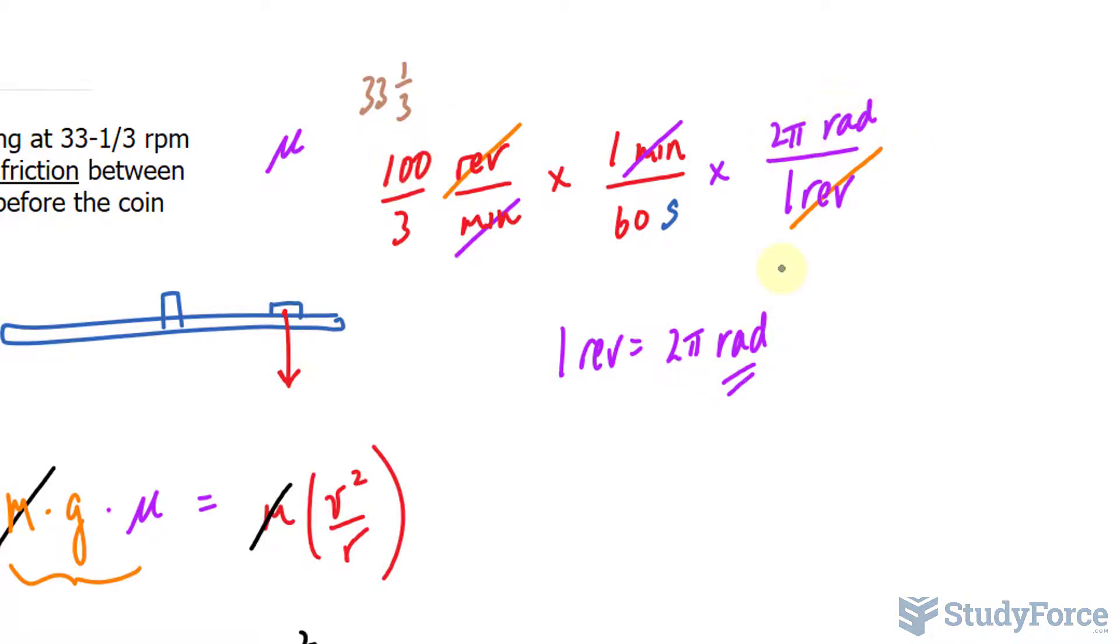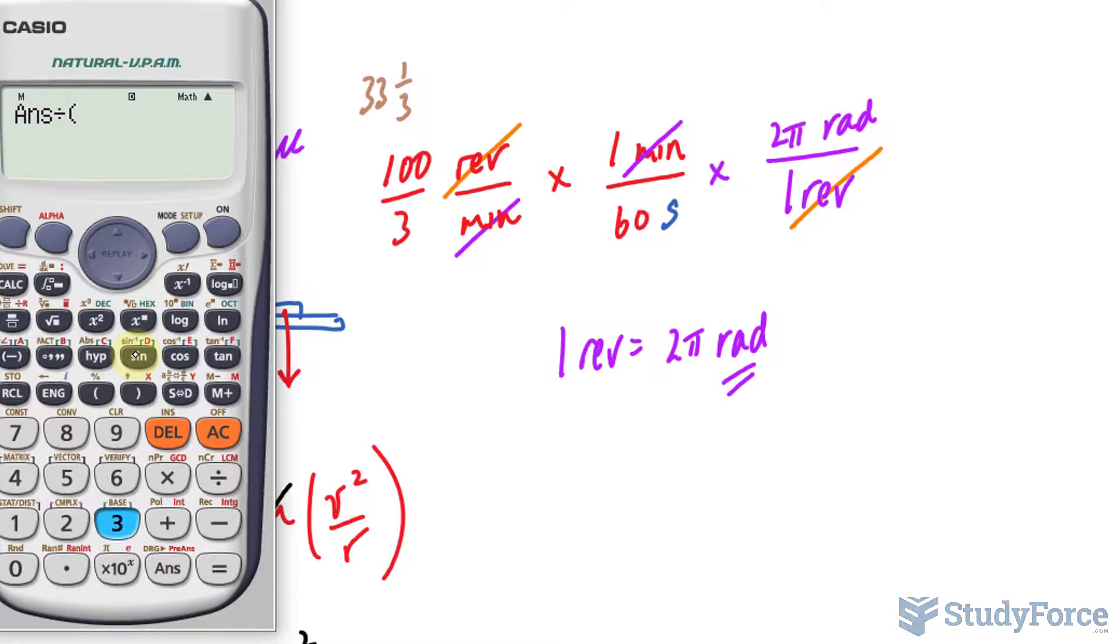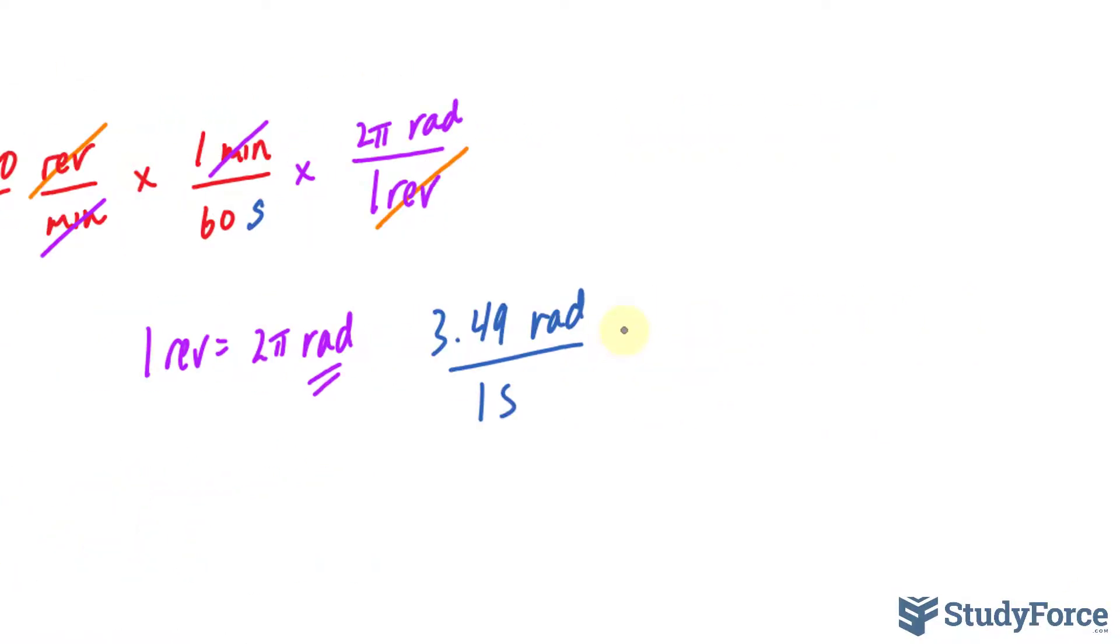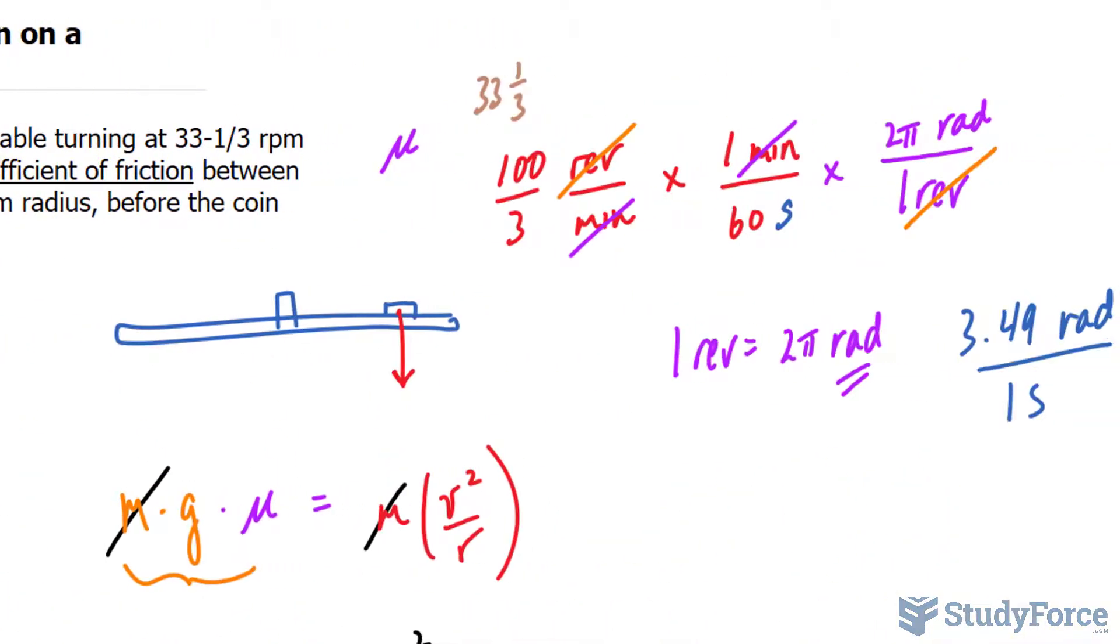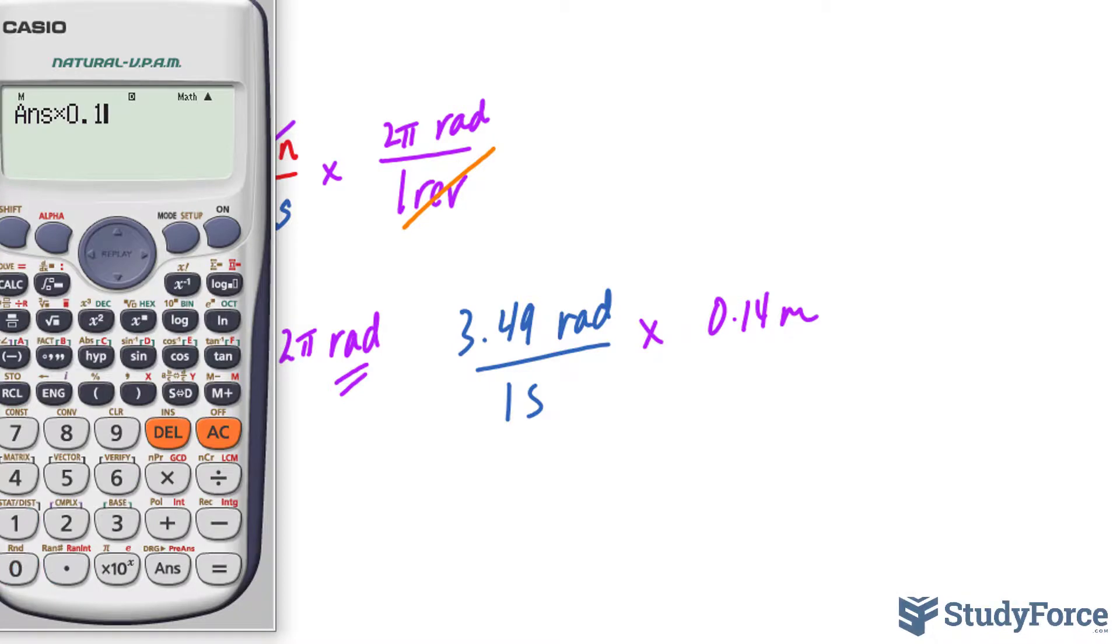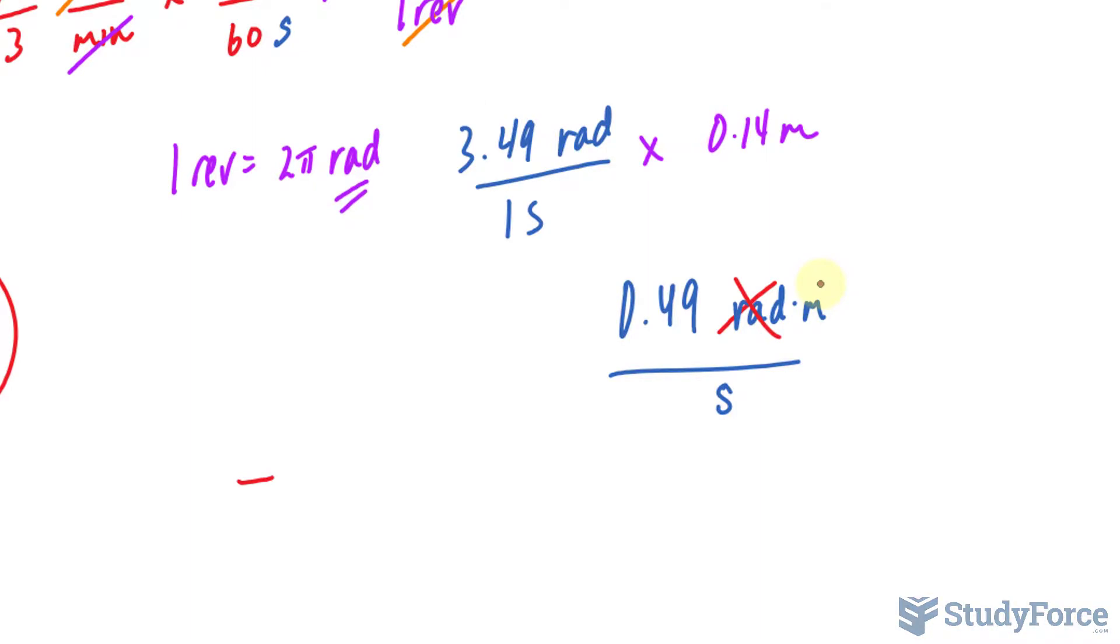We have 100 times 2 pi. Let's use our calculator. Should give you 200 pi, but let's find out what that number actually is. So 100 times 2 pi is 200 pi divided by 3 times 60 and we end up with approximately 3.49. So 3.49 radians per 1 second. All we have to do from here is multiply this by the radius of the turntable and that was 0.14. So 0.14 meters and we end up with, multiplying this now by 0.14, we get 0.49. So 0.49 radians times meters per second. Like I said, you don't even need to write down radians. And you get the velocity as 0.49 meters per second.